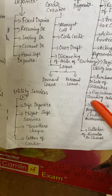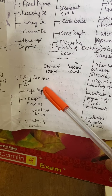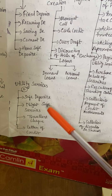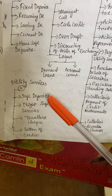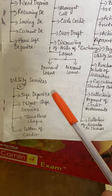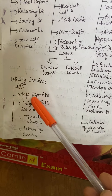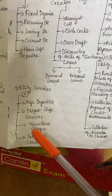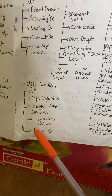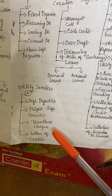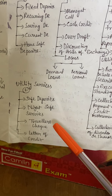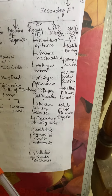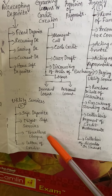These are the agency functions of commercial banks. Under utility services, banks provide safe deposit lockers where customers can put any kind of valuables. Night safe services, traveler checks — if a customer is traveling from one place to another, the bank provides traveler checks in different currencies. And letter of credit — the bank pays initially on behalf of the account holder and afterward collects from the customer, providing assurance on behalf of the individual.